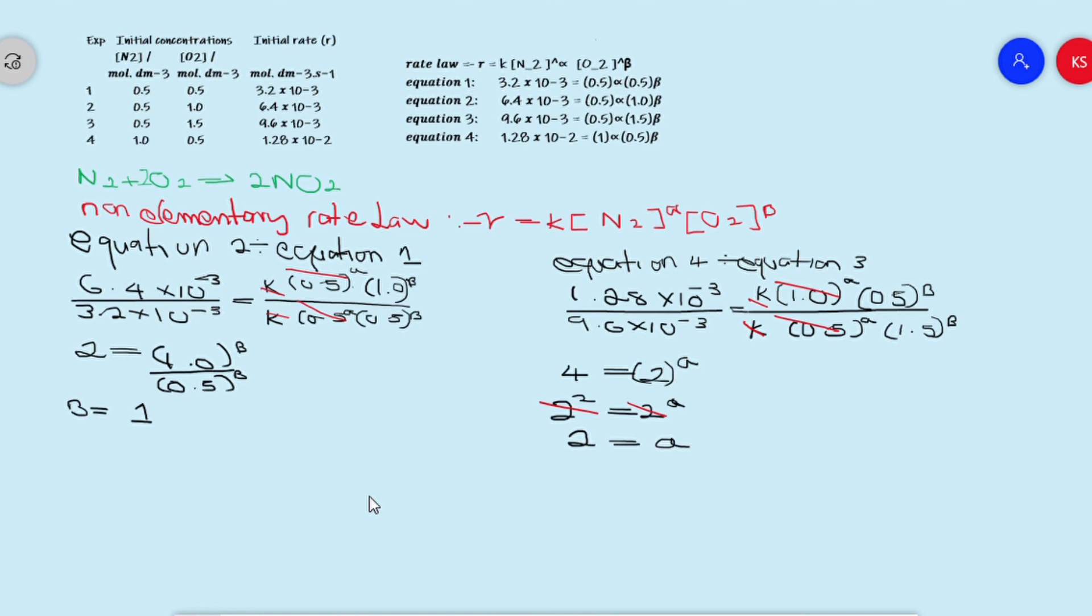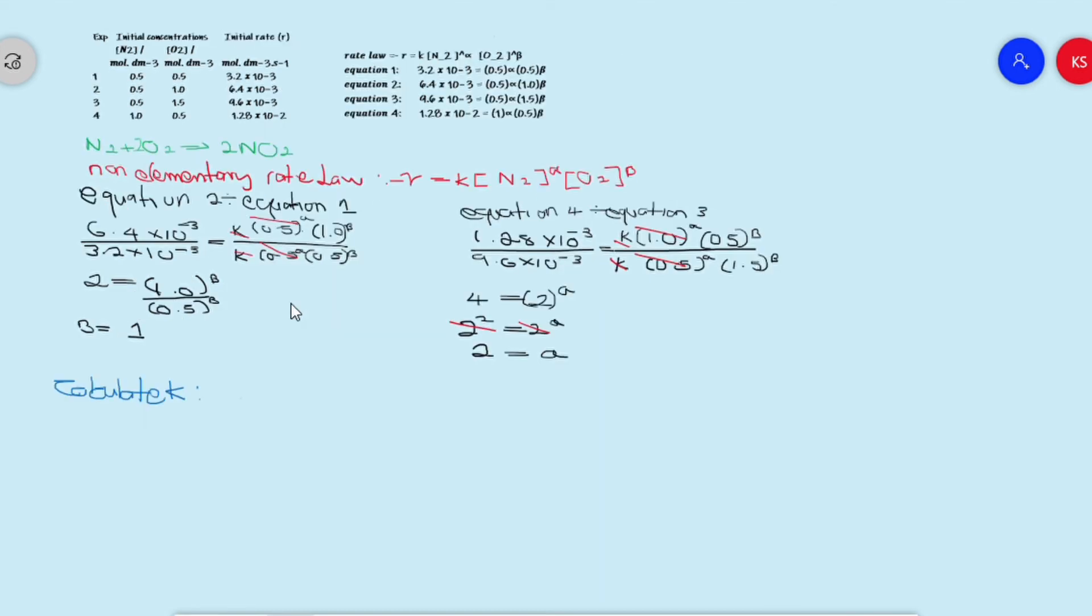Now that we know our alpha and our beta, the next step is to calculate constant k, and to do this, I am going to select the first equation. Let's see what we have. For equation one, the initial concentration for nitrogen is 0.5. The initial concentration for oxygen is also 0.5. If you punch this into your calculator...